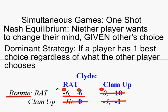They're both going to jail for six years. Now a second way that we look at games like this to try to predict what people might do — and this is actually a bit simpler than a Nash equilibrium — is to see if a player has a dominant strategy.